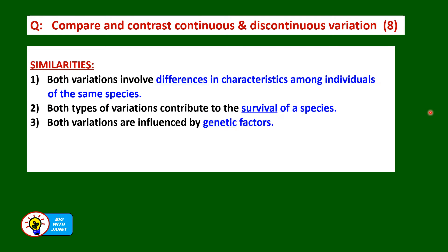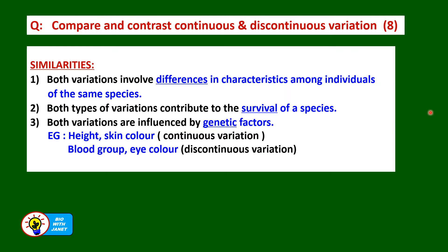Both variations are influenced by genetic factors. For example, height and skin colour are influenced by genes that we inherit from both our parents. And blood group and eye colour are determined by the genes that are passed down from parents to children.